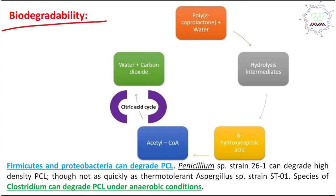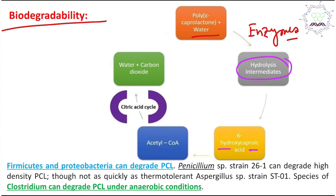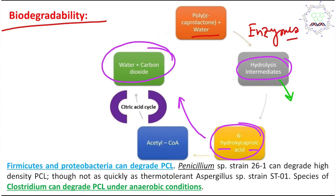During biodegradation, PCL reacts with water in the presence of enzymes — which are biocatalysts — and is hydrolyzed to produce 6-hydroxycaproic acid. This tells us the enzyme type involved: hydrolase. The 6-hydroxycaproic acid further reacts with acetyl-CoA and through other biochemical pathways is ultimately converted into water and carbon dioxide, which are safely expelled from the body.